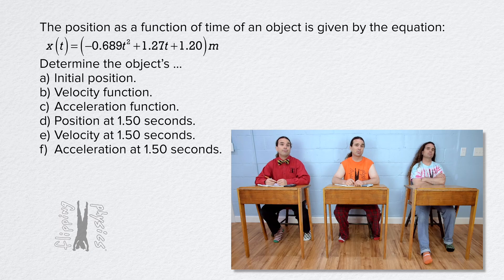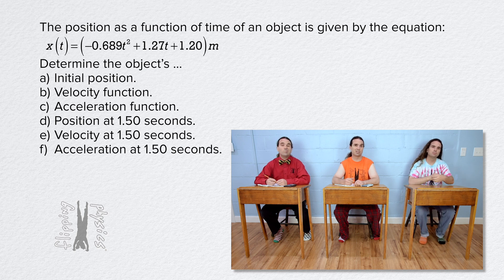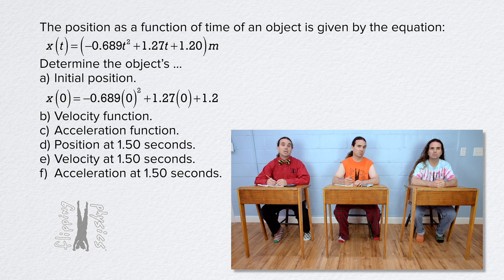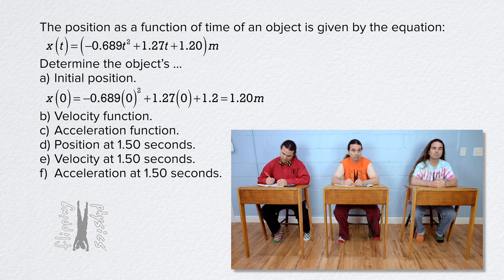Part A is determining the initial position of the object. The initial position is at time equals 0 seconds, so we substitute 0 into the position equation. Position at time 0 equals negative 0.689 times 0 squared plus 1.27 times 0 plus 1.2. That equals 1.20 meters with sig figs. Correct, Bobby.